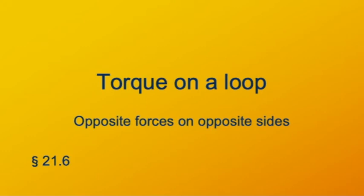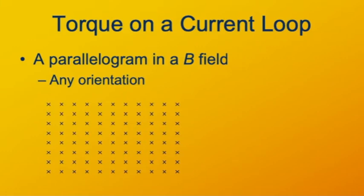Now that we've talked about the force exerted by a magnetic field on a wire carrying an electric current, let's talk about what happens when the wire is in a loop. One part of the loop carries a current in one direction, and the other part carries a current in the opposite direction. These forces are on the net completely canceling each other. This might not exert a net force on the wire, but it still could exert a net torque. This magnetic field is illustrated by these x's — a uniform magnetic field pointing into the screen away from you. This green parallelogram represents a conducting loop bearing an electric current.